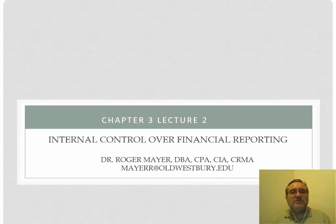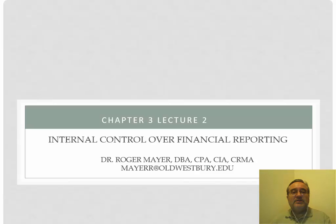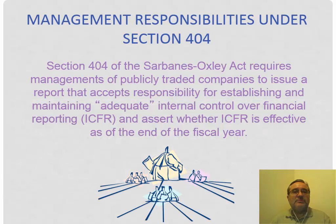In our last session, we talked about the internal control framework, which is the COSO model. We talked about five specific areas related to internal controls. Now what we're going to talk about is the audit of the internal controls over financial reporting. This audit is mandated by Sarbanes-Oxley for publicly traded companies — the key focus being internal controls over financial reporting.